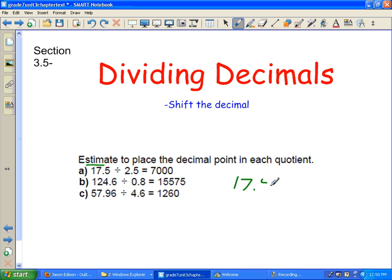Let's round off 17.5, and then round off 2.5. Well, 17.5 will round off to 18. 2.5 will round off to 3. So how many times will 3 go into 18? And it'll be about 6 times, so our answer should be about 6.